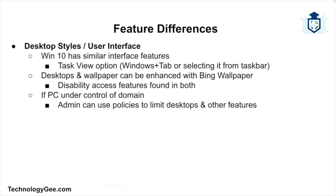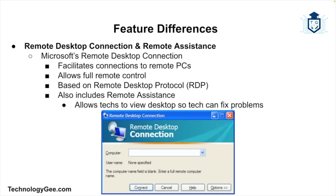Windows 10 versions come with similar interface features including the Task View option, and desktops and wallpaper can be enhanced with Bing Wallpaper. Disability access features are found in both. When the computer comes under the control of a domain, the experience might differ because an administrator can use policies to limit desktops and other features.